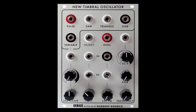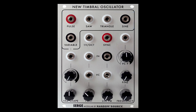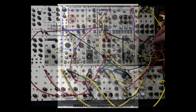In yesterday's NTO — that is the new timbral oscillator tutorial — I looked at processing the sine wave and the pulse wave differently. Today I'm off the hook and I'm going to process all five wave shapes differently.